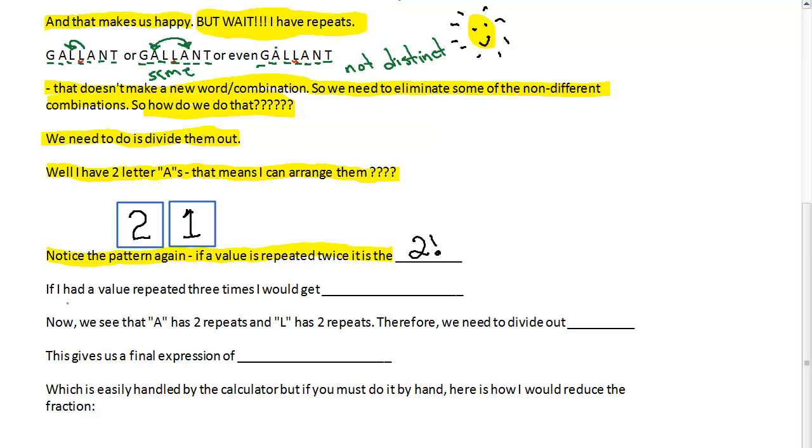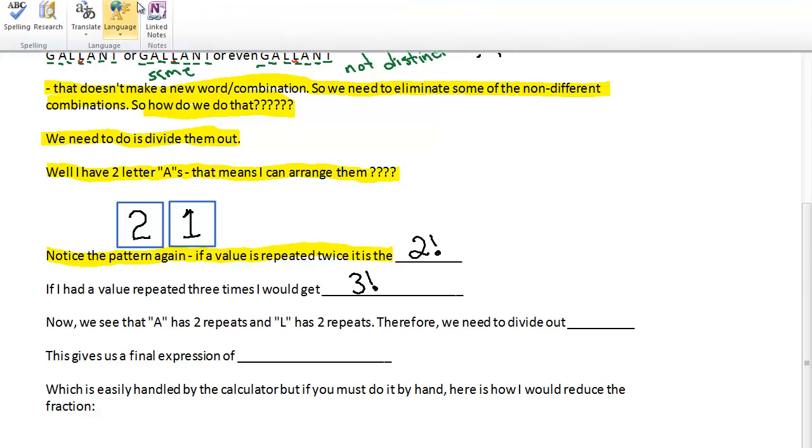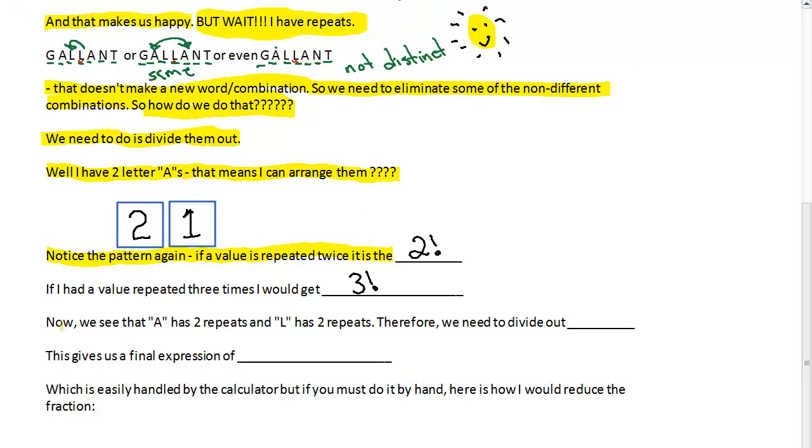So what if I had a value that would be repeated three times? I would get the, wait for it, three factorial. And then four factorial for four repeats, and so on and so forth. So this factorial pattern repeats a lot. Now, we see that the A has two repeats and the L has two repeats. Therefore, we need to divide out.